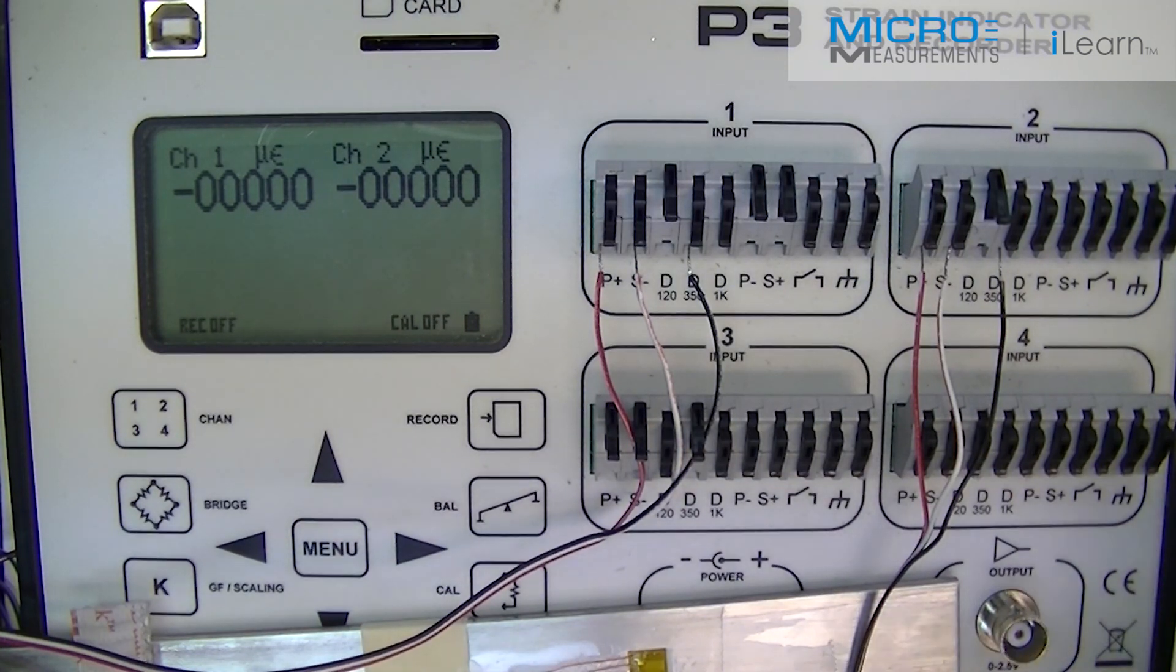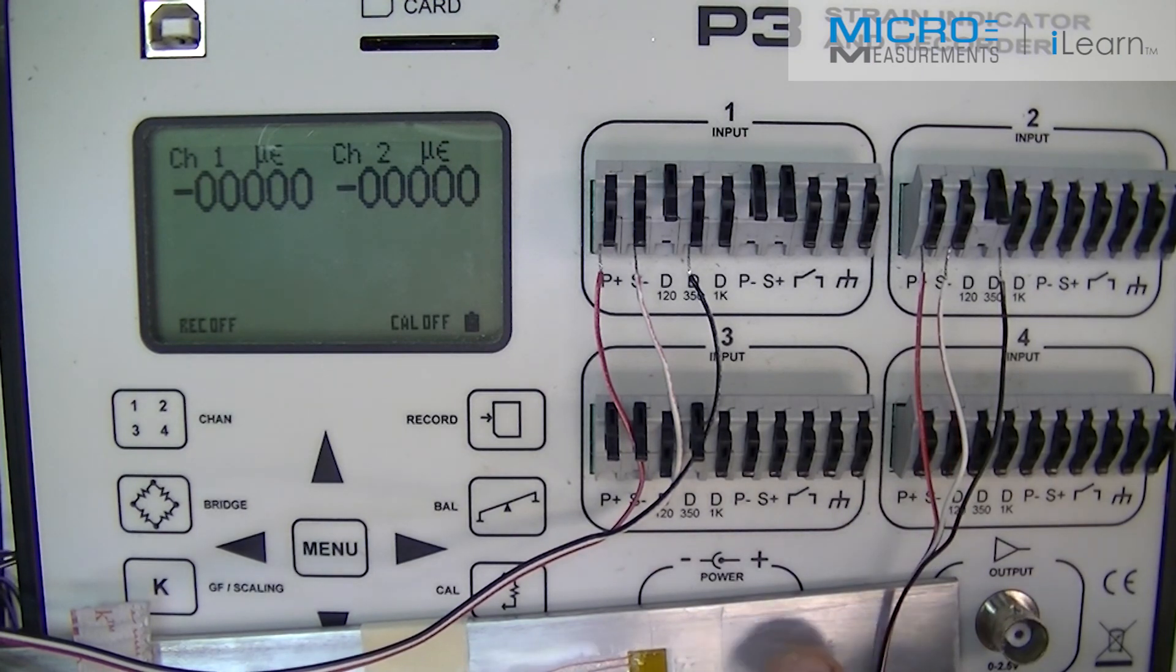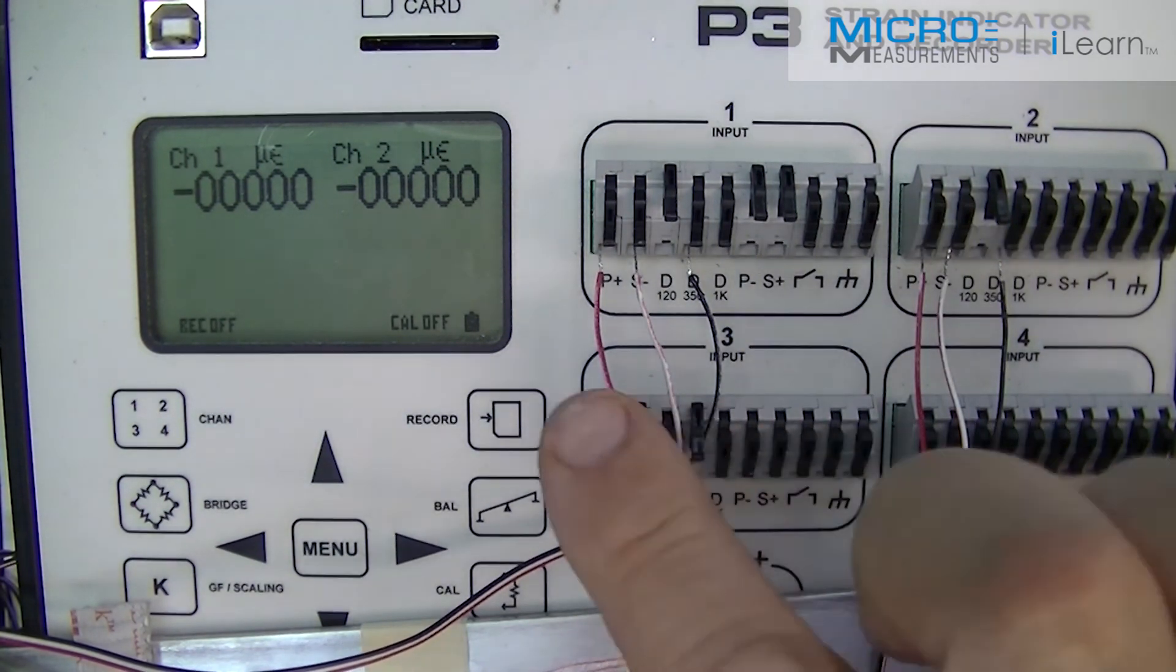The test of a strain gauge installation is zero return. When a gauge is bonded to a good spring-like material with a very linear elastic region, the material behaves like a spring. Under low loads, low strains, as I strain it, it should snap back to zero. Right now, the strain gauges are both indicating zero microstrain.